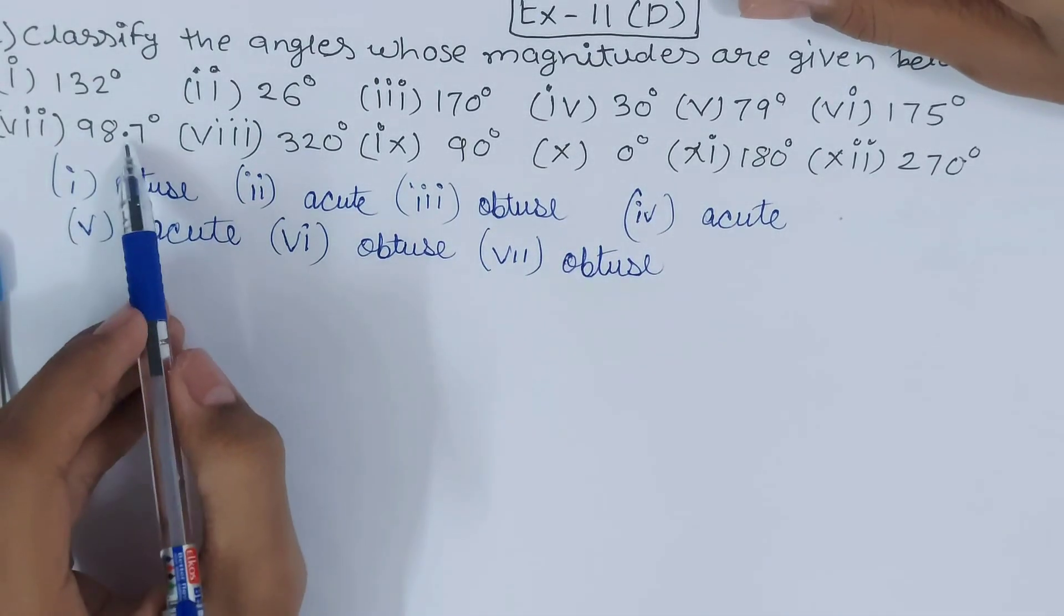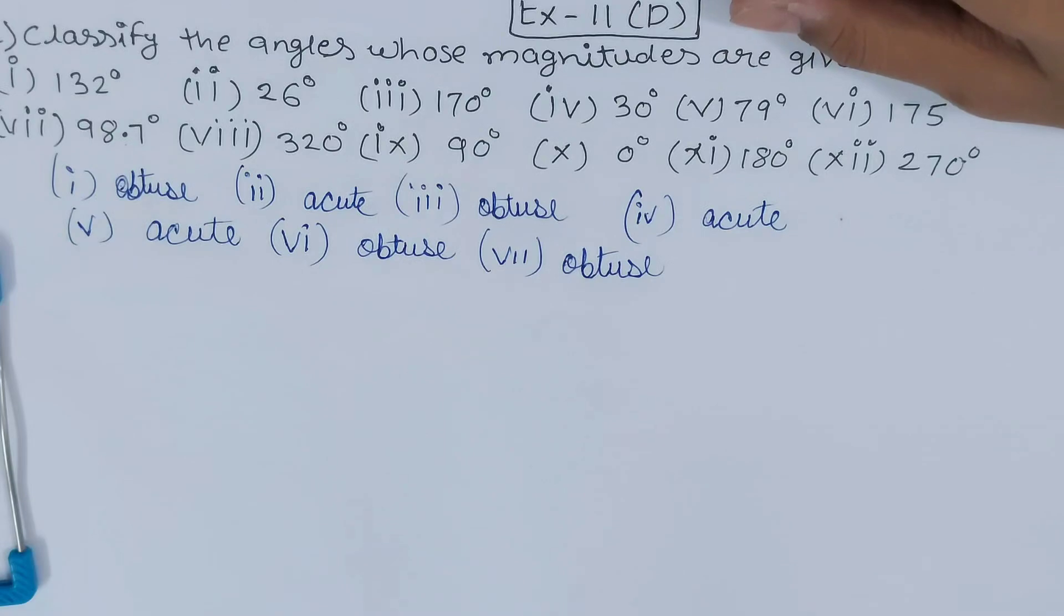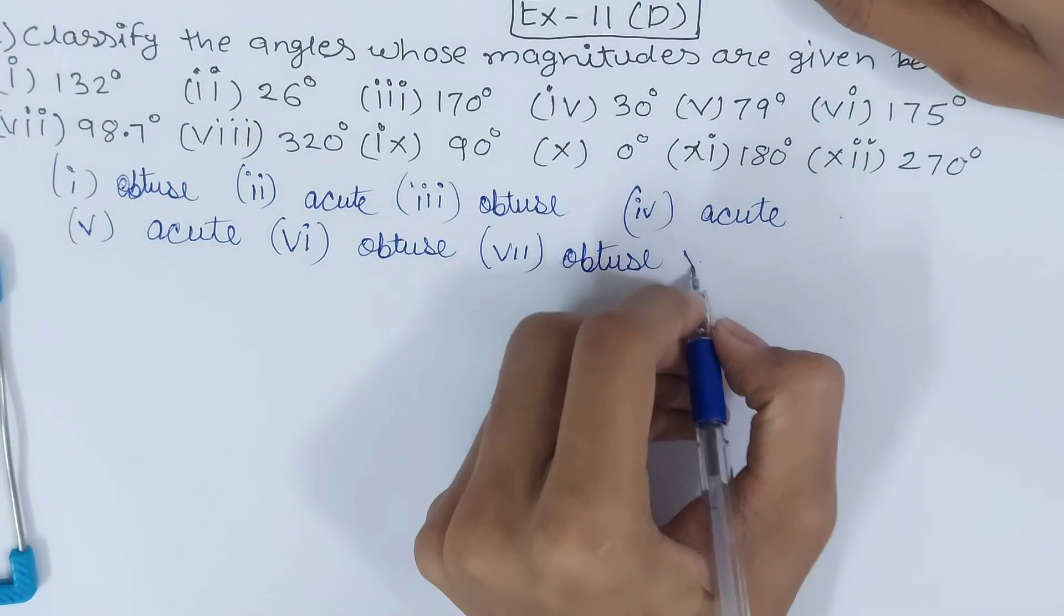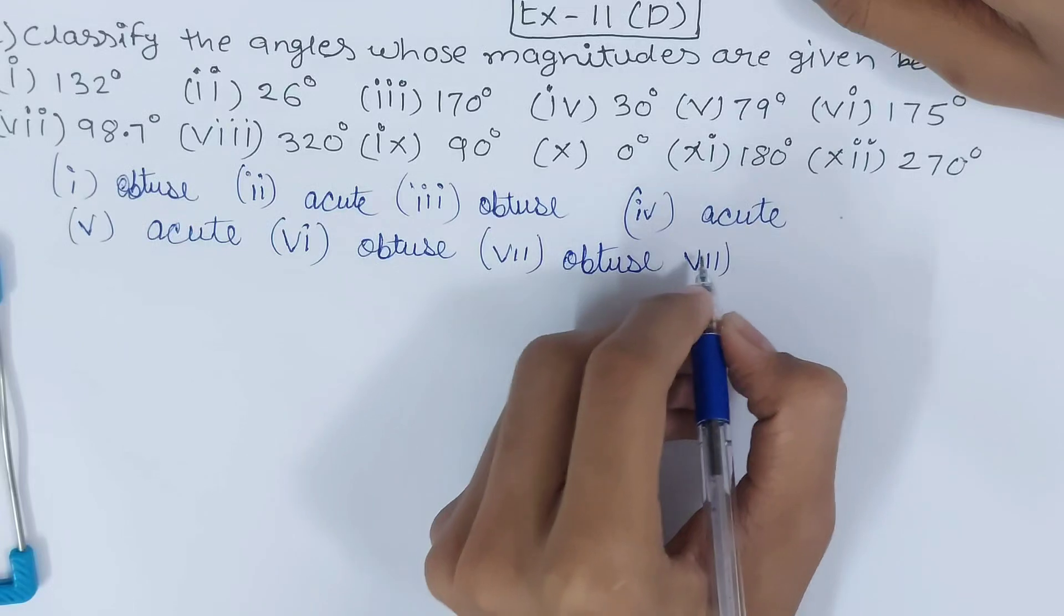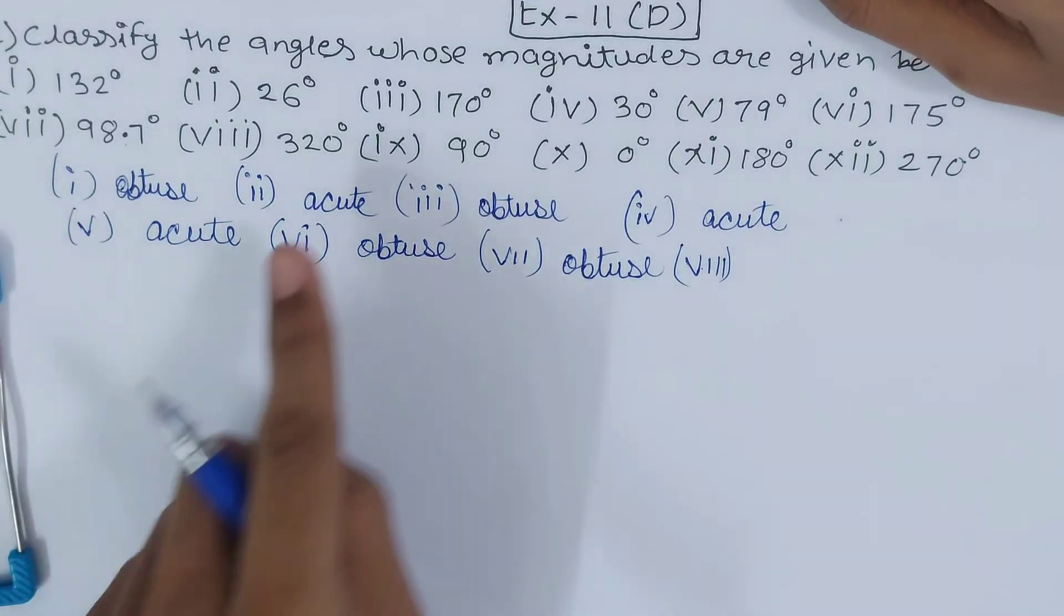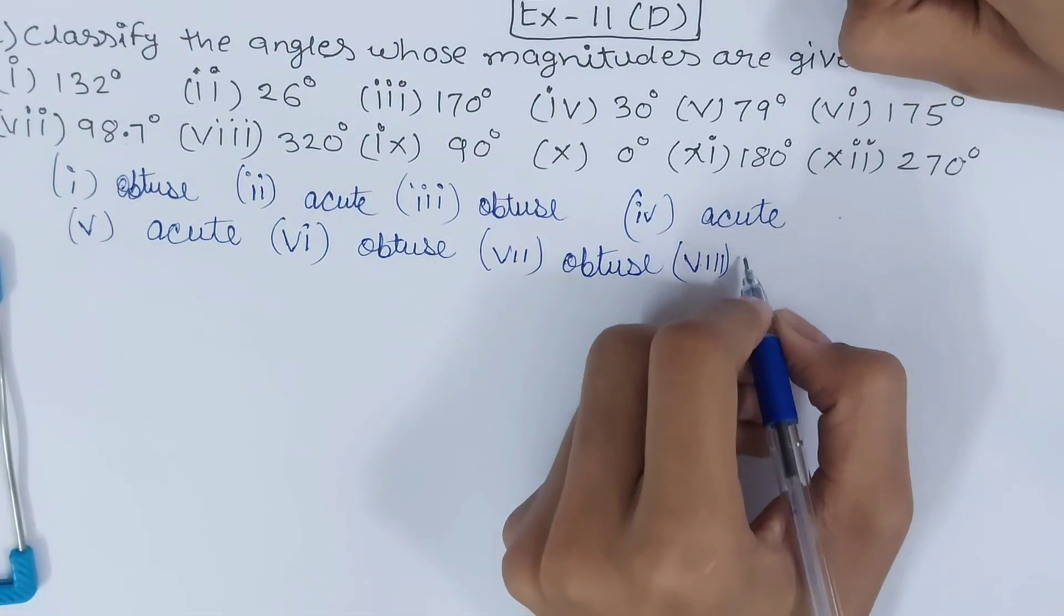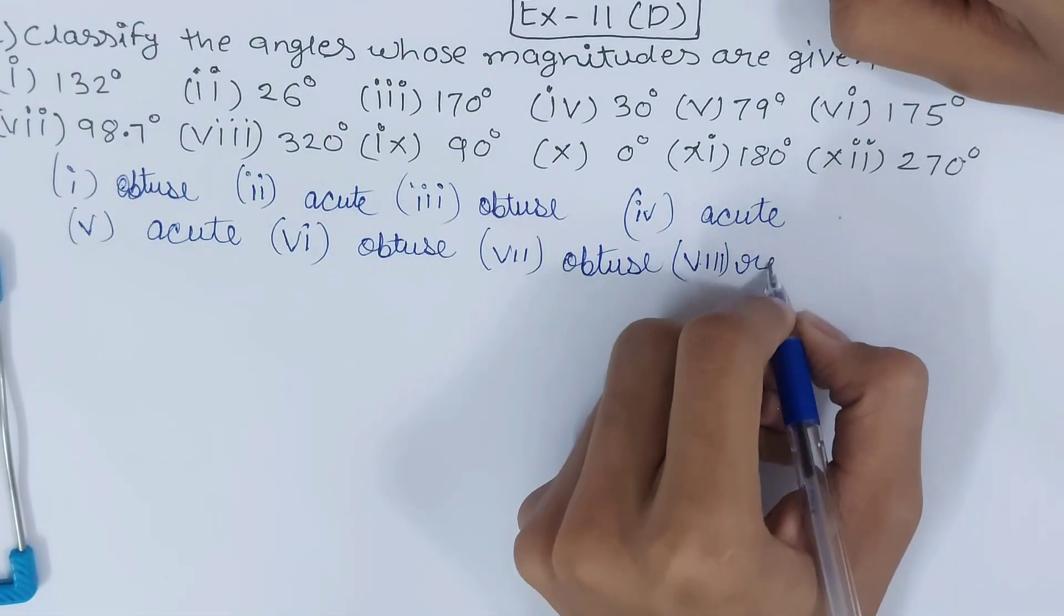Don't worry about the decimals - even if it has decimal you just have to see if it's more than 90 and less than 180. Then we have the eighth part - 320 degrees. Now see, more than 180 degrees. So this can't fall under obtuse and acute, there is no chance. So this is a reflex angle - more than 180, less than 360. So your answer becomes reflex.